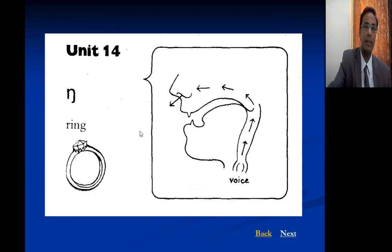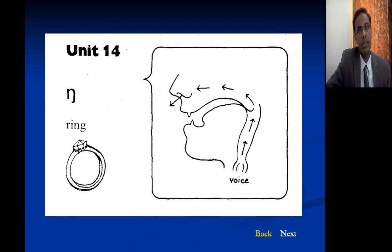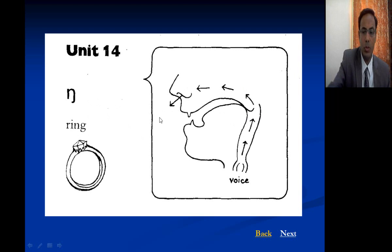The NG sound — as in 'ing' — is a bilabial nasal. You can see it is composed of two letters N and G. The closure is at the back of the tongue and air goes out through the nasal cavity — it is also voiced.